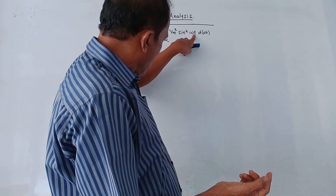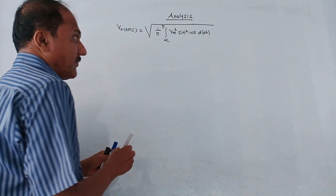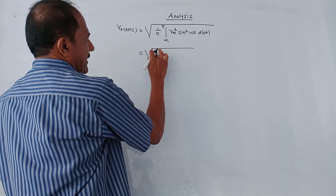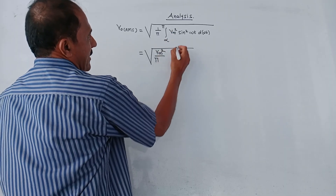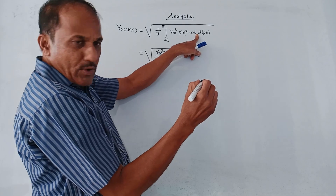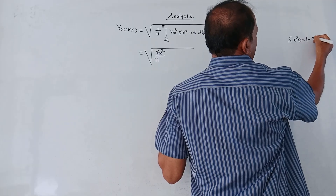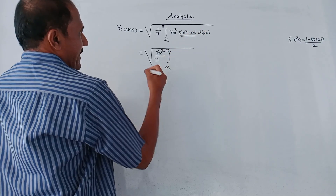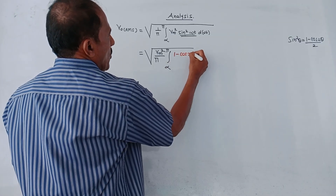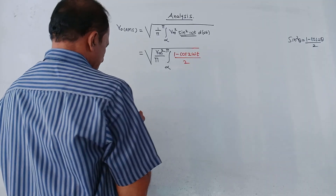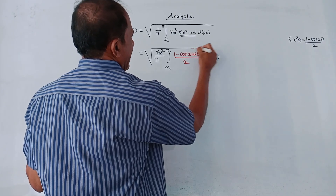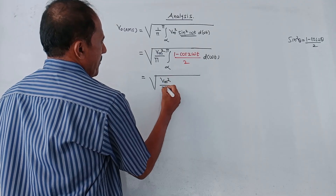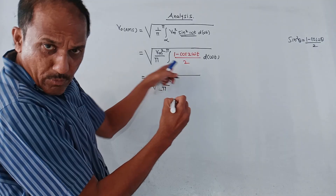Let us simplify this equation. This can be written as √(Vm²/π · ∫[α to π] sin²(ωt) d(ωt)). We use the identity sin²θ = (1 − cos2θ)/2, so sin²(ωt) = (1 − cos(2ωt))/2. The expression becomes √(Vm²/π · ∫[α to π] (1 − cos(2ωt))/2 · d(ωt)).